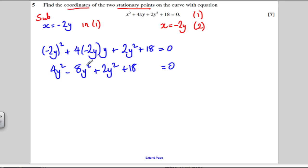Let's tidy up. 4y squared minus 8y squared is minus 4y squared. But add another 2y squared. You get minus 2y squared. Plus 18 is 0.